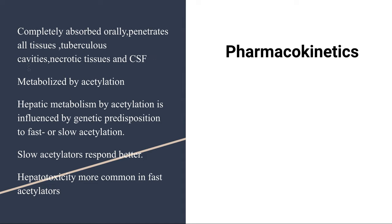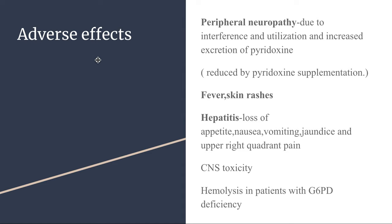Isoniazid is metabolized by acetylation, so a person may be a slow or fast acetylator due to genetic predisposition, giving a half-life of one hour or three to five hours respectively. Slow acetylators respond to the drug better but are more prone to peripheral neuropathy, whereas fast acetylators are more prone to hepatotoxicity. Its adverse effects include peripheral neuropathy, because isoniazid interferes with the utilization and excretion of pyridoxine (B6), which can be reduced by pyridoxine supplementation.